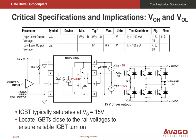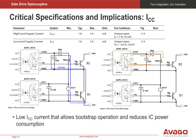Avago also has parts with rail-to-rail output, such as the ACPL-K342 and H342, and ACPL-P34X and ACPL-W34X, that reduce the V output high drop. Avago gate driver optocouplers operate with very low ICC supply current, with a maximum current of only 3 milliamps. This is an obvious advantage to the designer, as low ICC current means lower power loss in the gate driver device.